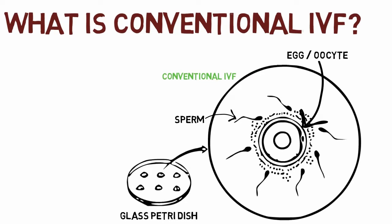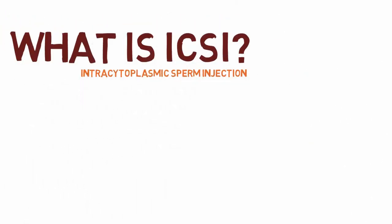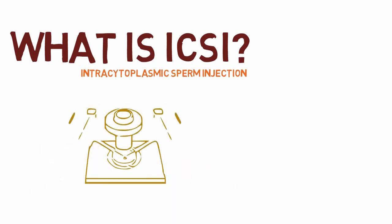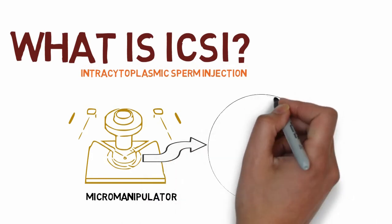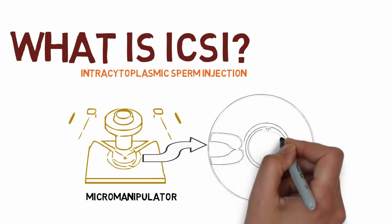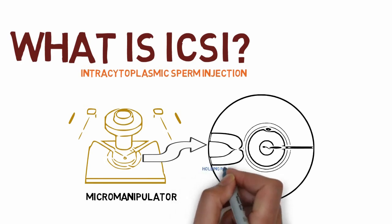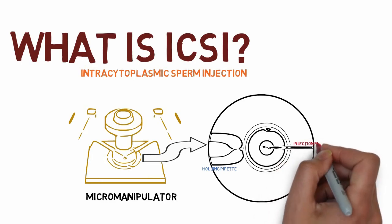So what is ICSI? ICSI stands for intracytoplasmic sperm injection. This process makes use of specialized equipment called a micro-manipulator, which allows us to select a single sperm and directly deposit it inside an egg. This is done using a holding pipette to hold the oocyte in position, and an injection pipette to deposit the sperm directly into the oocyte. This process is called ICSI, or intracytoplasmic sperm injection.